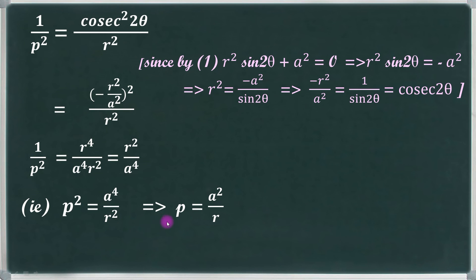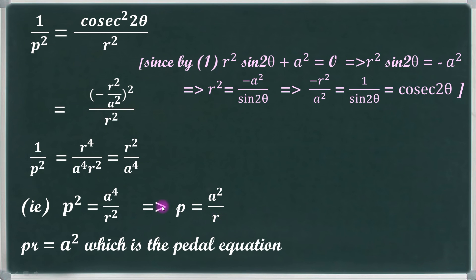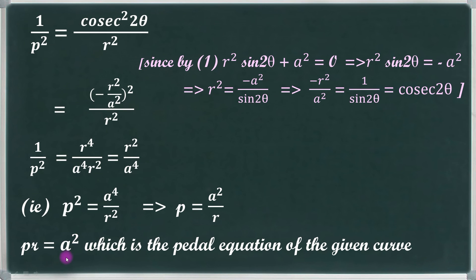Taking the reciprocal, p² = a⁴/r². Taking square root on both sides, we get P = a²/r. Cross multiplying, we get P·R = a². This is our pedal equation of the given curve.